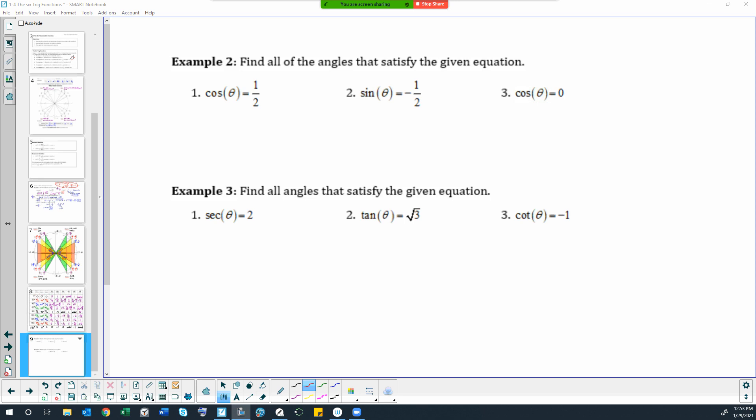Example two, find all of the angles that satisfy the given equation. So the first thing I want you to notice about number one is that it's positive. The reason that's important is that cosine is positive.